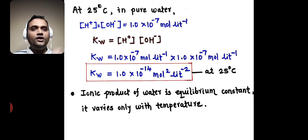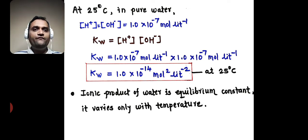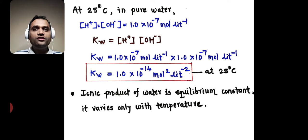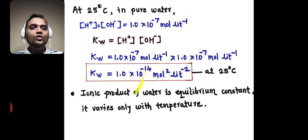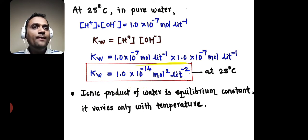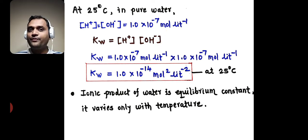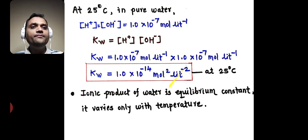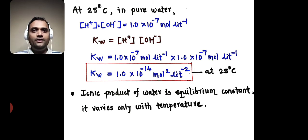According to the definition of ionic product of water, KW = [H+][OH-]. Putting in the values, KW = (1 × 10⁻⁷ mol/L) × (1 × 10⁻⁷ mol/L). Therefore, KW = 1 × 10⁻¹⁴. The exponents get added: −7 and −7 gives −14. The unit is mol² L⁻², because mol × mol = mol² and L⁻¹ × L⁻¹ = L⁻². So the ionic product of water at 25°C is 1 × 10⁻¹⁴ mol² L⁻².